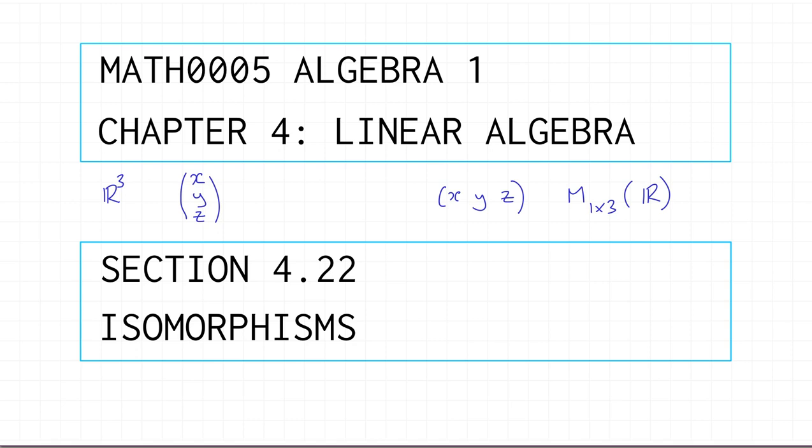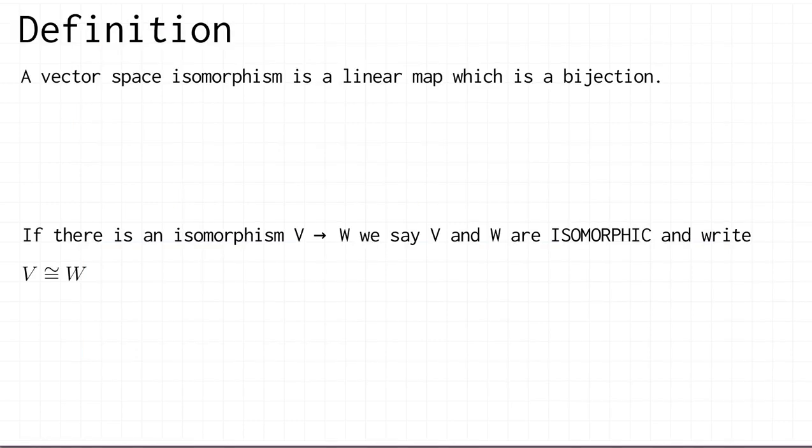Can we make precise this idea of two vector spaces being different but essentially the same as vector spaces if you just think about their vector space properties? The answer is yes, and the way we do it is through the concept of an isomorphism of vector spaces. A vector space isomorphism is a linear map which is a bijection — just putting together two concepts you've already seen.